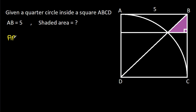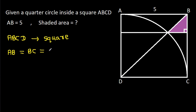ABCD is a square. That means AB is equal to BC, equal to CD, equal to DA. And AB is 5, so AD will also be 5. And also, this angle will be 90 degrees.